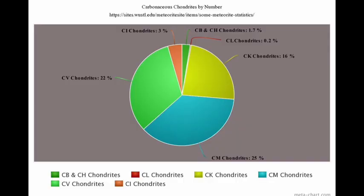Carbonaceous chondrites are divided into six main groups — CI, CM, CV, CO, CR, and CK — and two tentative groups, CH and CB, based on their chemical composition, petrology, and oxygen isotopic compositions.